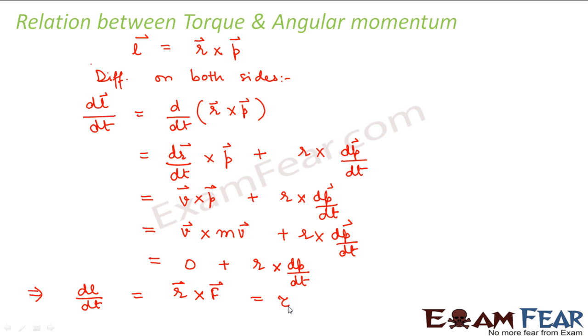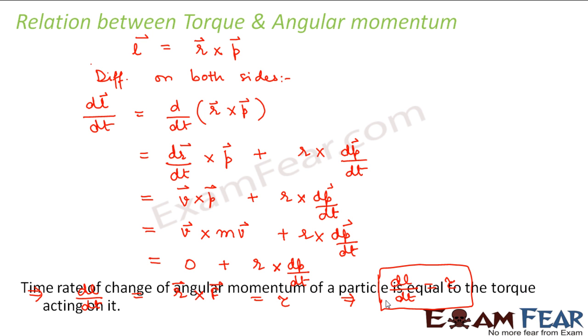So from this we get that dL by dt is equal to torque. So time rate of change of angular momentum is equal to torque. So we can write this statement that time rate of change of angular momentum of a particle is equal to the torque acting on it.